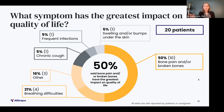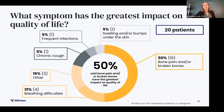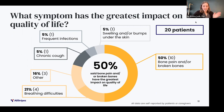Finally, to understand the burden of these conditions, we asked survey participants which symptom most affects quality of life. 50% said bone pain and/or broken bones have the greatest impact on quality of life, shown here in the darkest yellow. Other symptoms that impacted quality of life were breathing difficulties, chronic cough, frequent infections, and swelling and/or bumps under the skin. That's all I have to share with you all today. We hope in the near future that we'll be able to provide this information on an individual condition basis as our cohorts grow. We're so grateful to all those who have already generously provided information for this study, and we look forward to providing more insights about CLAs in the future. Thanks so much for your attention, and I'll pass it back to JP.